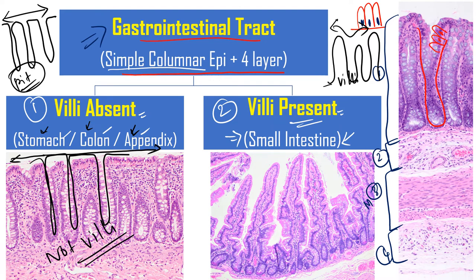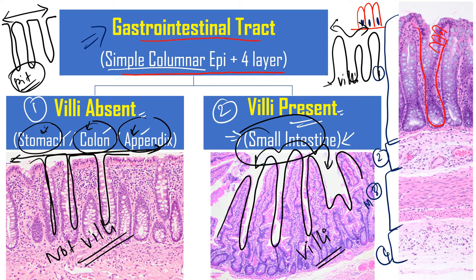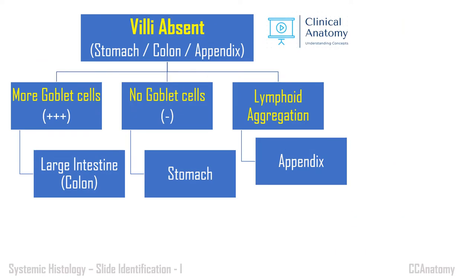For villi, they are finger-like extensions and the topmost region is slightly irregular — not smooth like pits. The luminal surface is a bit irregular — this is the typical feature of villi. If villi are present, it is small intestine. If villi are absent, it is not small intestine — it may be stomach, colon, or appendix.